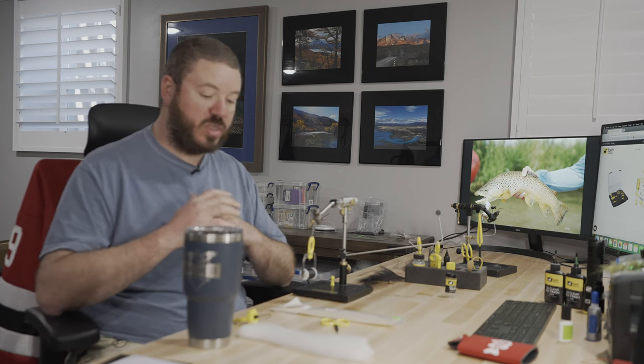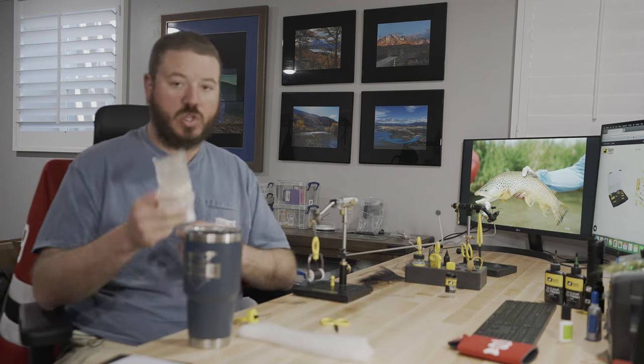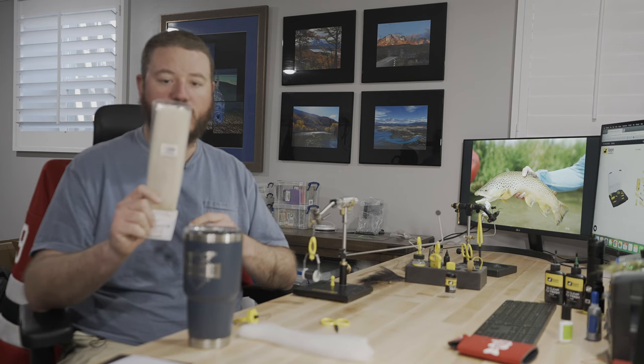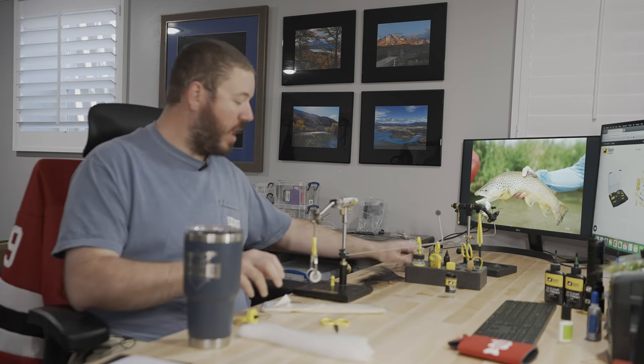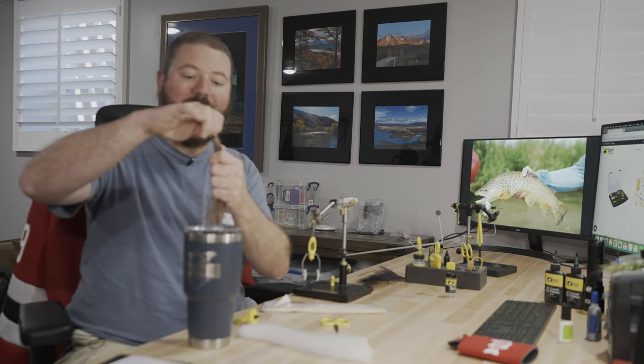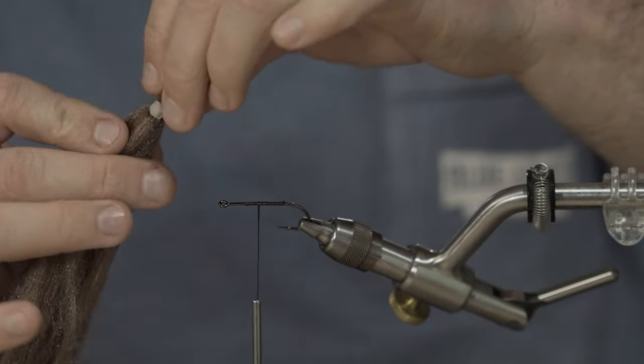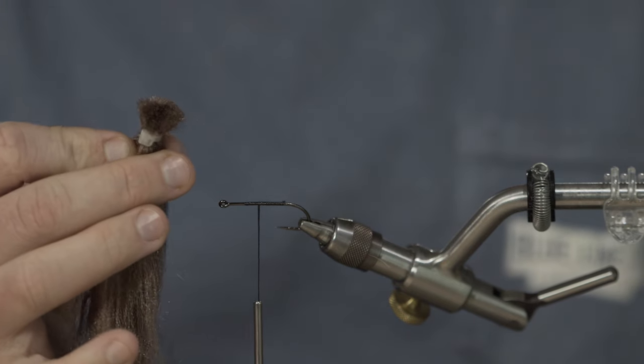So one of the things we're going to start with is EP fibers. And to start, I'm going to give you a tip. So this is a new package of EP fibers. One of the things you want to do when you get these in is take them out of the package and put a zip tie wrap around the top of them. That'll really help save you from these things becoming just a huge mess. So that's my pro tip of the day.